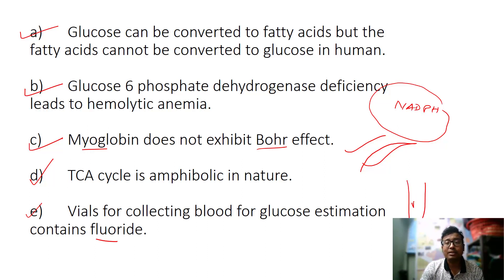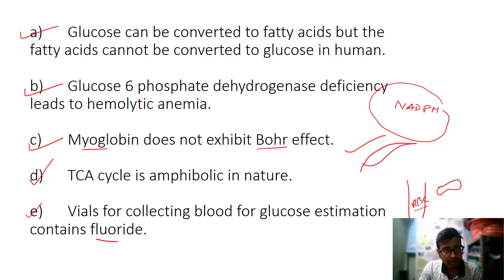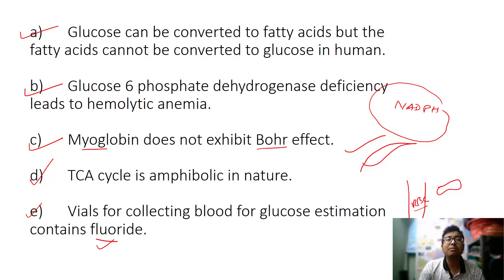Why does the glucose level drop? RBCs are non-nucleated cells with only cytoplasm, and glycolysis — which occurs in the cytoplasm — continues after blood is collected in the vial. Glycolysis converts glucose to pyruvate, lowering glucose levels. There is no TCA cycle since there is no mitochondria in RBCs. So if we can stop glycolysis, blood glucose will not be utilized — and that is exactly what sodium fluoride achieves.